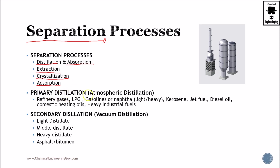Then we get primary distillation, the most important one, which is the atmospheric distillation. It separates crude roughly into refinery gases, LPG, gasoline, naphthas, kerosene, jet fuel, diesel oil, and heavy industrial fuels, as well as the typical atmospheric residues.